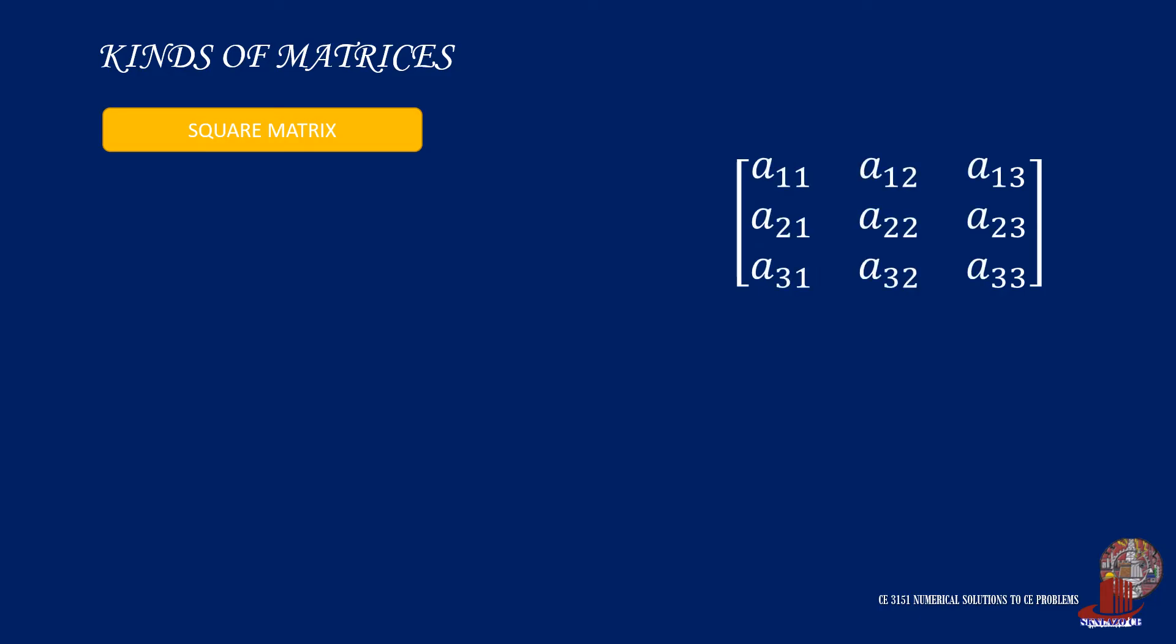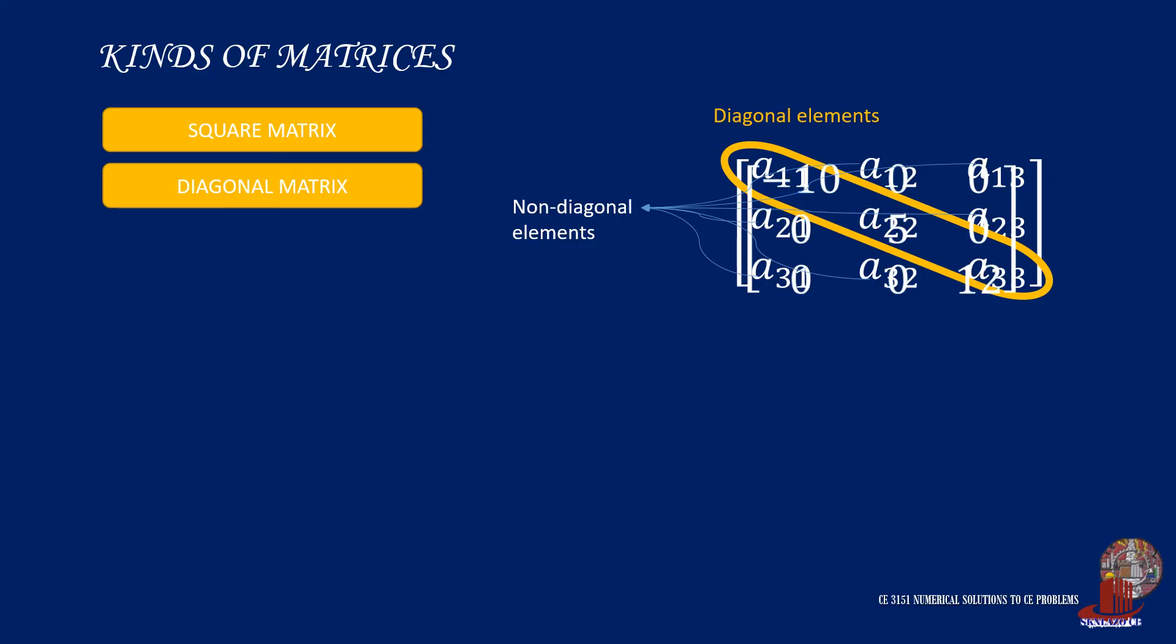The diagonal elements of a square matrix are those elements where the row and column index are the same. For example, the diagonal elements of the 3 by 3 matrix A are A sub 11, A sub 22, and A sub 33. The other elements are non-diagonal elements. The diagonal elements form the diagonal of the matrix. If all non-diagonal elements in a matrix are zero, then the matrix is a diagonal matrix.